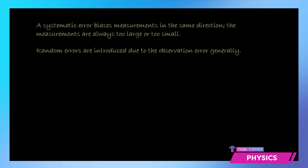Errors in a measurement can be of two types. Number one is a systematic error. Systematic error basically biases your measurement in the same direction — that means either it will give you too large or too small a value. Let's take for example there is a weighing scale that you have at home.